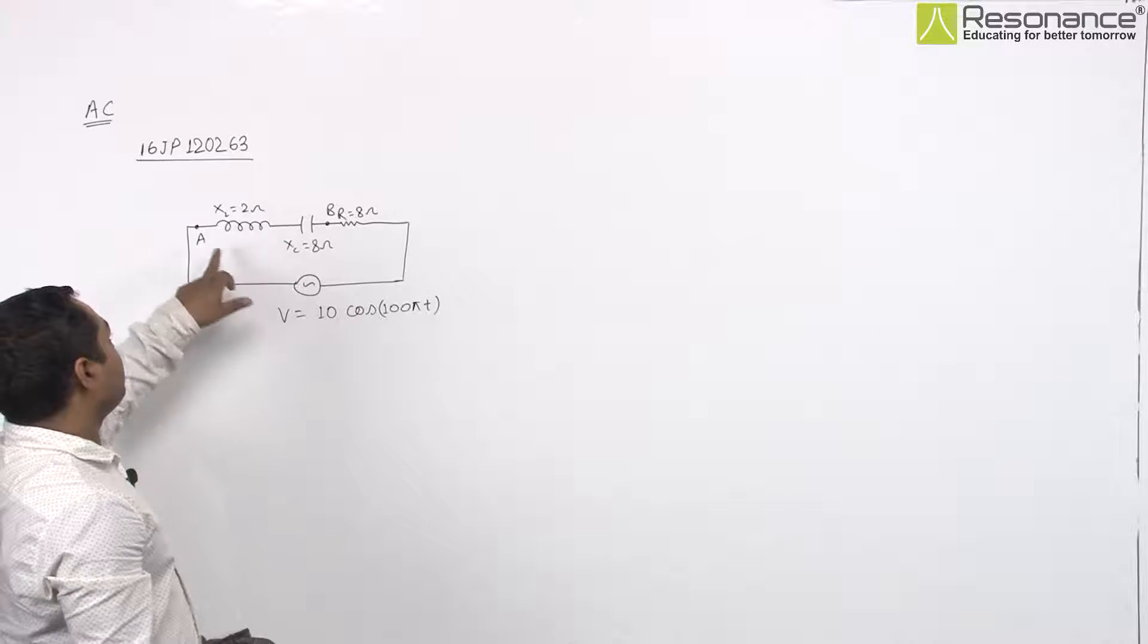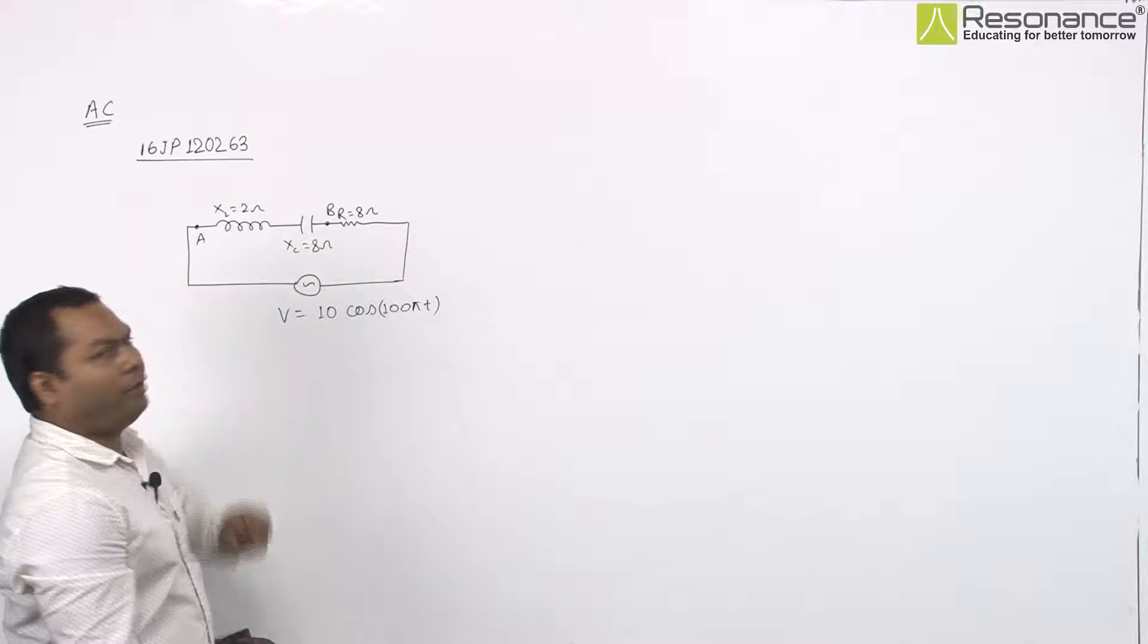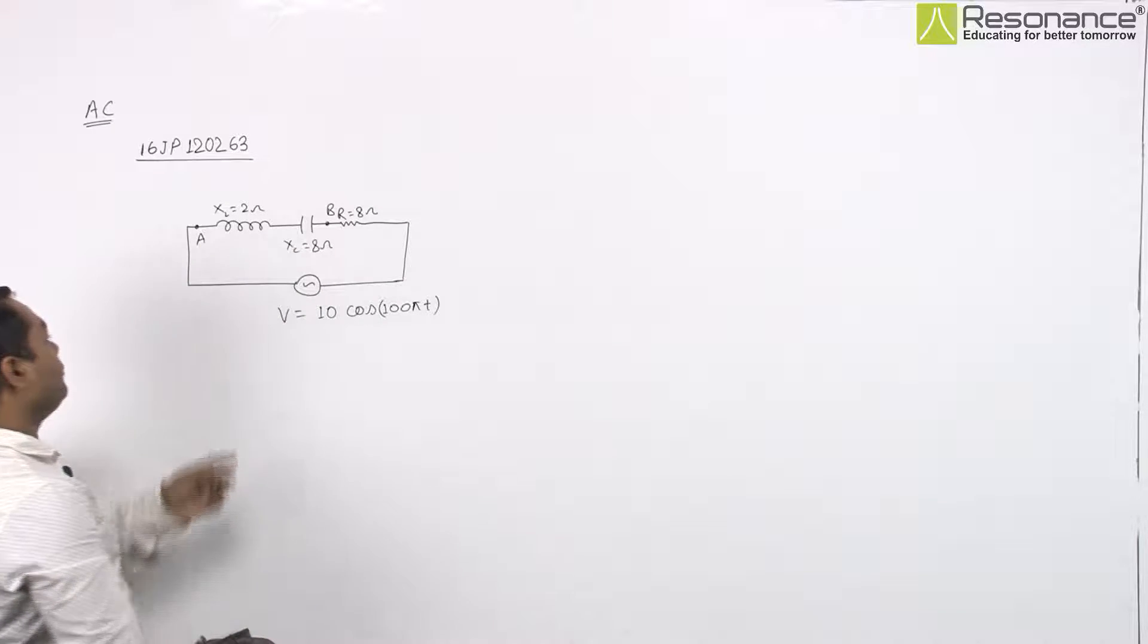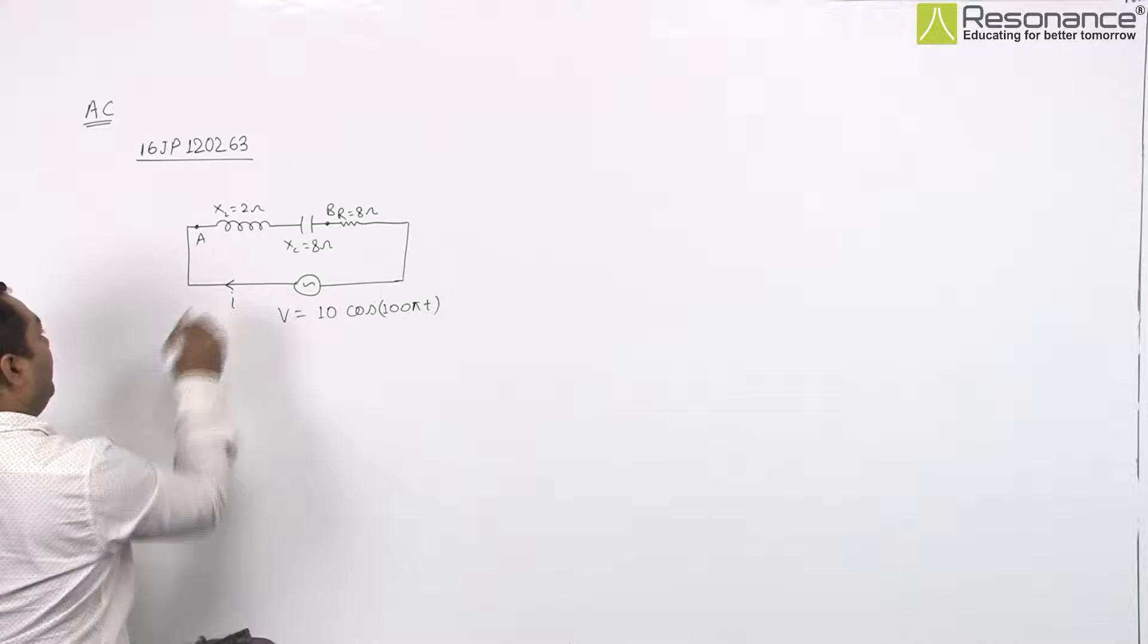In the given circuit, it is asking to find potential difference across point A and point B. For that, we will have to find current in this circuit I.